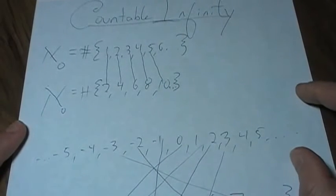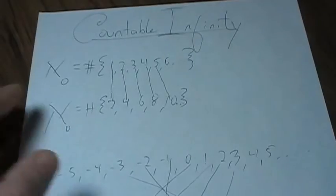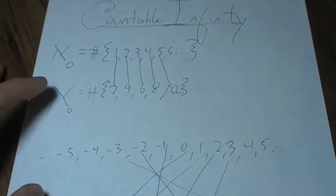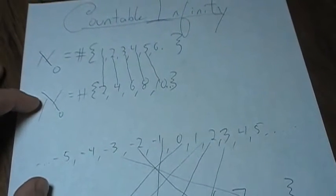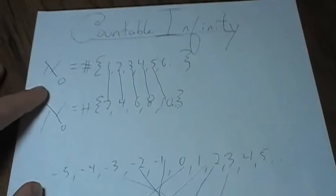So you might be wondering: maybe Aleph-null is all there is. If Aleph-null equals the integers, the even numbers, the odd numbers, maybe countable infinity is all there is. Well, that's actually not the case. As it turns out, no matter how hard Georg Cantor tried, he could not map the real numbers to the counting numbers, which led him to try to prove that the real numbers have an infinity greater than that of the counting numbers — and indeed they do.